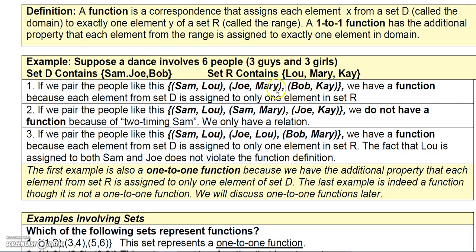We have a function because Sam is only assigned to one element from the range (Lou), Joe is only assigned to one element (Mary), and Bob is only assigned to one element (Kay). This is also a one-to-one function because Lou is only assigned to Sam, Mary is only assigned to Joe, and Kay is only assigned to Bob.